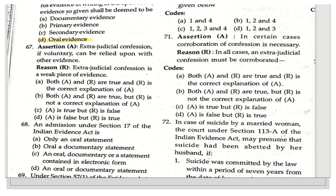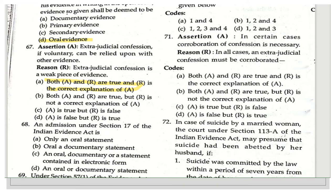The next assertion-reason question states: Assertion — extrajudicial confession, if voluntary, can be relied upon with other evidence. Reason — extrajudicial confession is a weak piece of evidence. Yes, extrajudicial confession is indeed a weak piece of evidence and therefore cannot be relied upon much unless given voluntarily. Both A and R are true and R is the correct explanation.